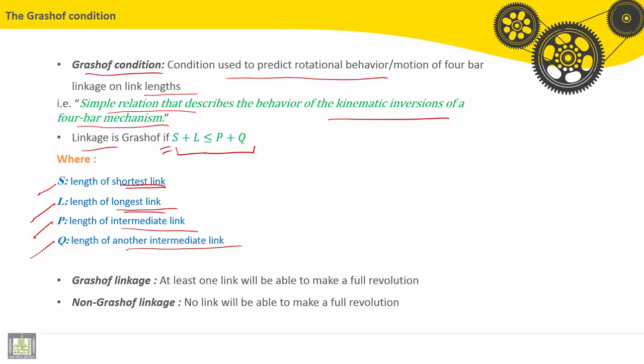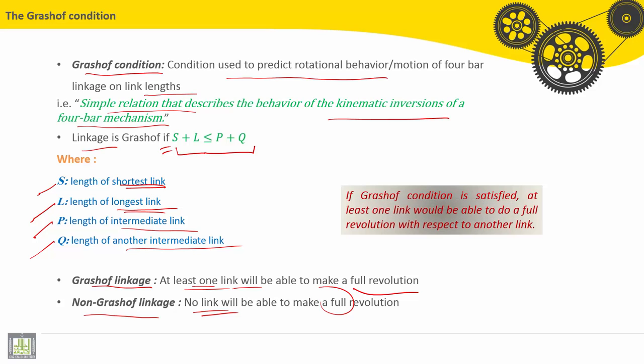For a Grashof linkage, at least one link will be able to make a full revolution. For a non-Grashof linkage, no link will be able to make a full revolution. So if the Grashof condition is satisfied, at least one link will be able to do a full revolution with respect to another link.